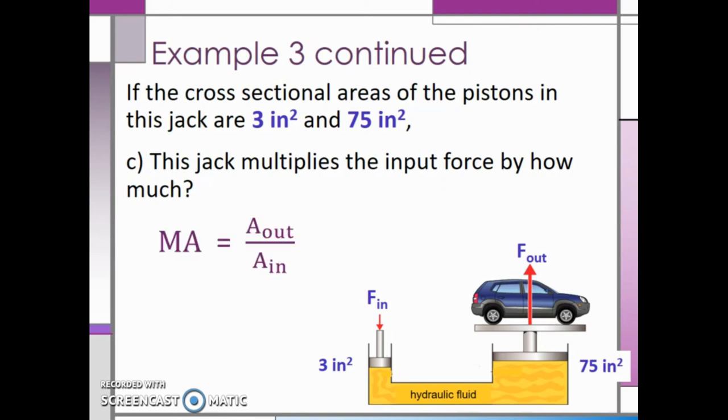The area out is 75 square inches and the area in is 3 square inches. This gives us a mechanical advantage of 25. Remember, mechanical advantage does not have any units because the units of square inches cancel each other out. This concludes our discussion on pressure and hydraulic jacks.